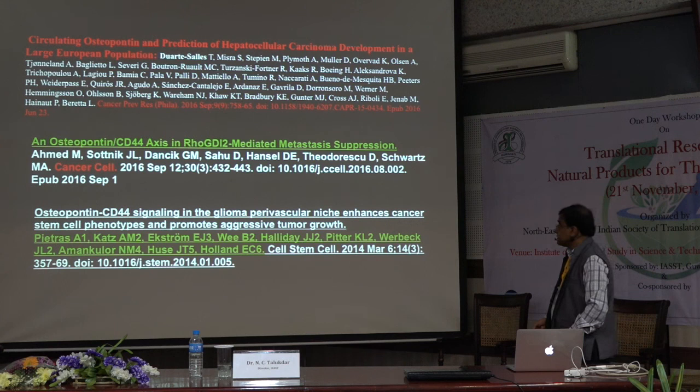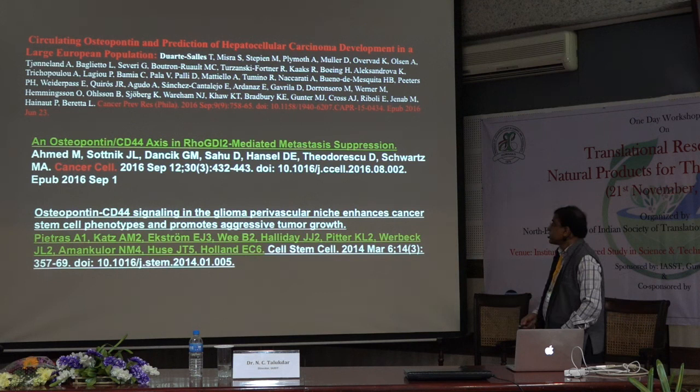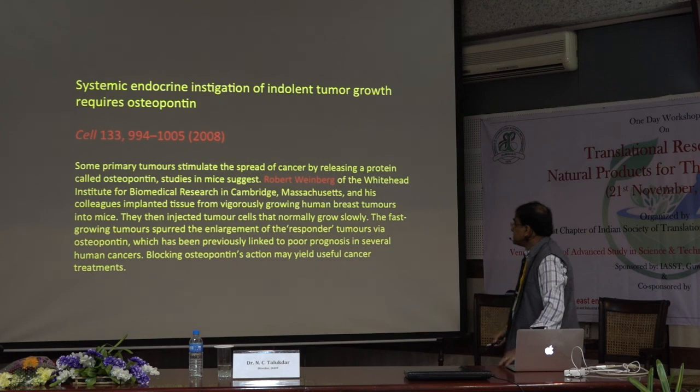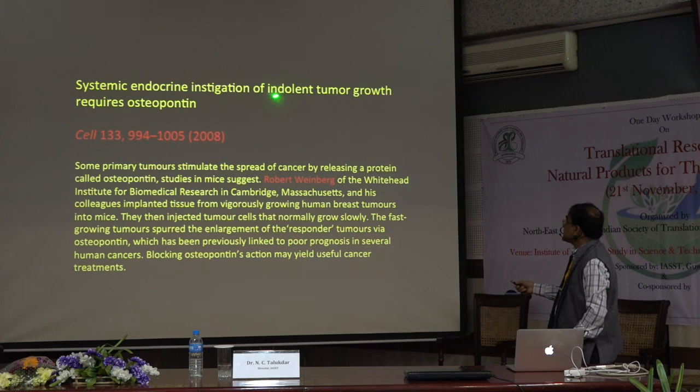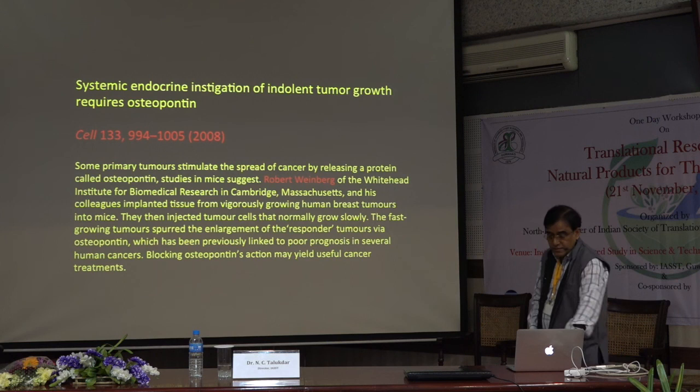Similarly, there is a group also showing in the journal Cell Stem Cell — a Cell Press journal — that Osteopontin-CD44 signaling regulates stem cell phenotypes in glioblastoma or brain cancer. Also a paper came from Bob Weinberg's lab showing that systemic endocrine instigation of indolent tumor growth requires osteopontin. Basically Bob Weinberg from MIT/Harvard has shown that osteopontin is one important target — if you block the function of this protein, you can control cancer to a certain level.